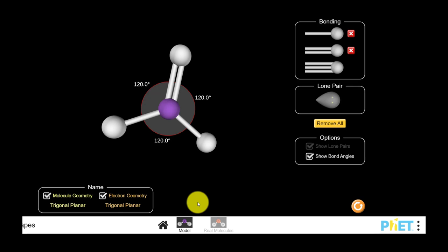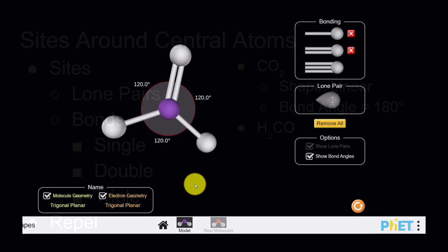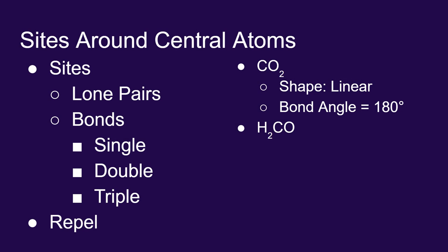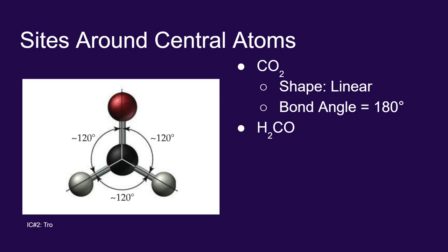Three sites get us far away from each other by making a 120-degree internal bond angle. So formaldehyde, H2CO, with its three sites on the central atom, the double bond and the two single bonds, creates a trigonal planar shape with internal bond angles of 120 degrees.